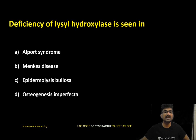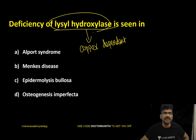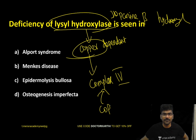Deficiency of lysyl hydroxylase is seen in Menkes disease. Lysyl hydroxylase is a copper-dependent enzyme. This question indirectly tests knowledge of copper-dependent enzymes, which include lysyl hydroxylase, dopamine beta-hydroxylase, and many other hydroxylases. In the electron transport chain, Complex 4 (cytochrome c oxidase) also contains copper.